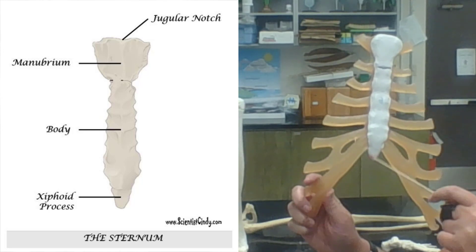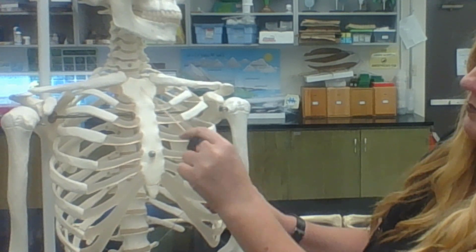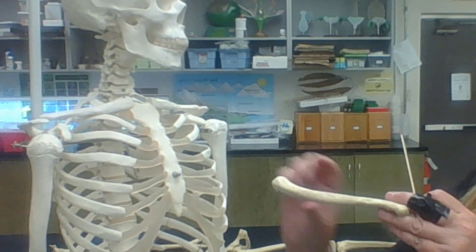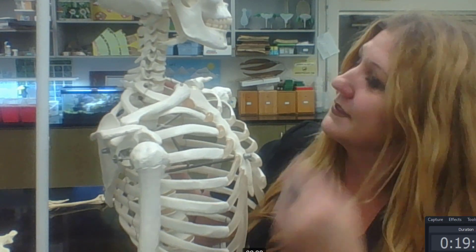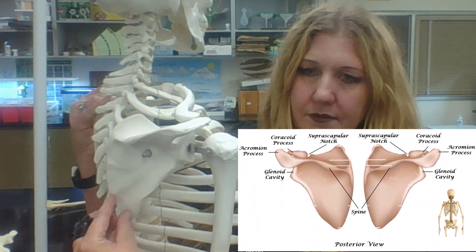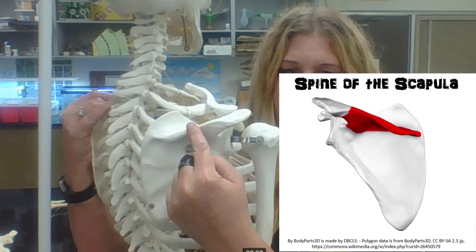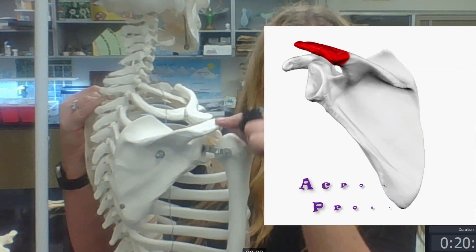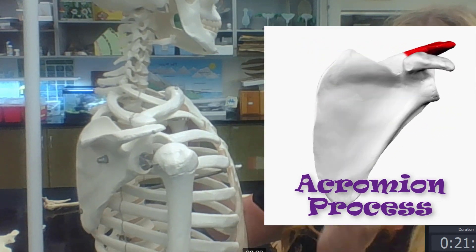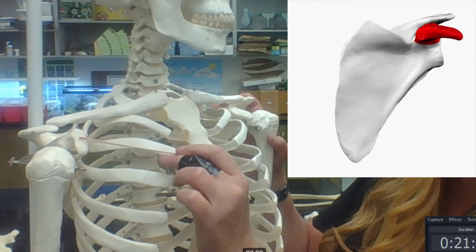The collarbones are called the clavicles, and the clavicle articulates with the manubrium of the sternum. On the posterior portion of the scapula you can see the spine of the scapula. As the spine of the scapula travels laterally it flattens out, and that point is called the acromion process, which articulates with the clavicle. There is also the coracoid process of the scapula, which does not articulate with a bone but acts as an attachment point for muscles.